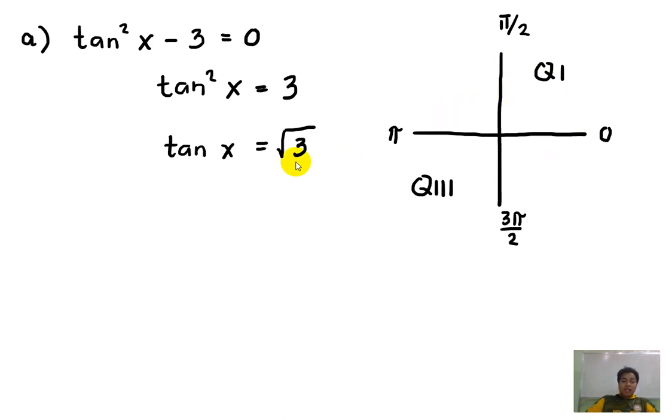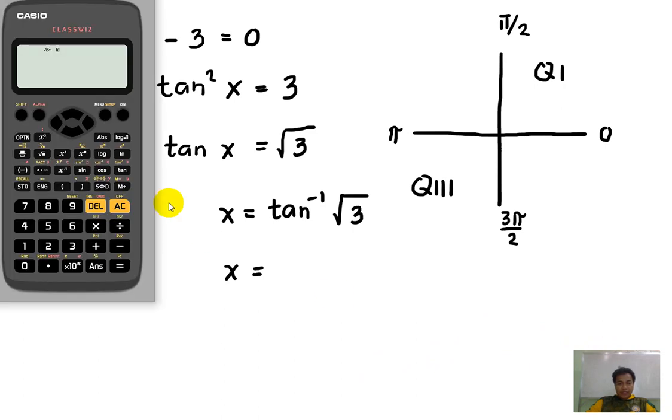So the question now is, what is the value of x? To solve this one, we can use our calculator actually. So we just do x equals inverse tangent of square root of 3. So we now have a value of x. Let's get out the magic calculator. x, inverse tangent of square root of 3.